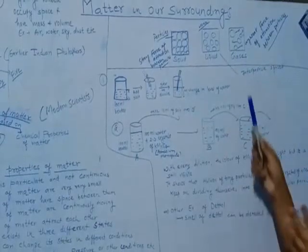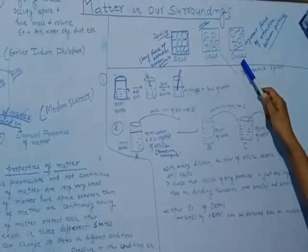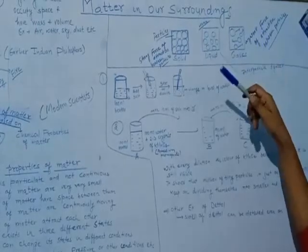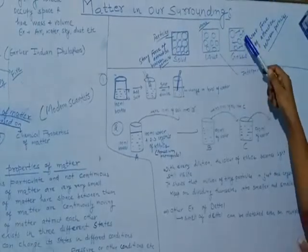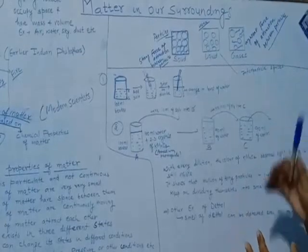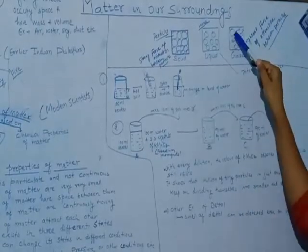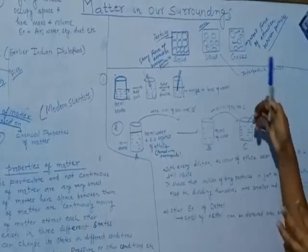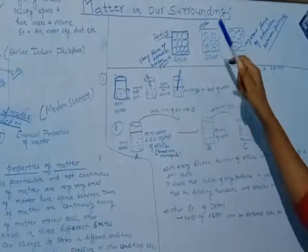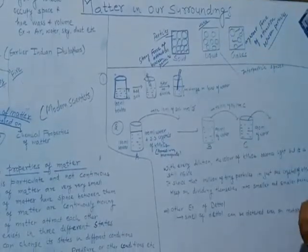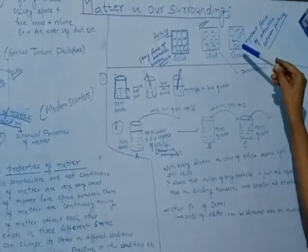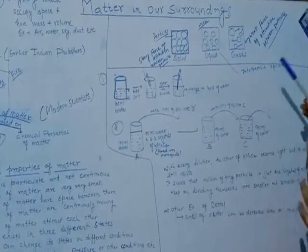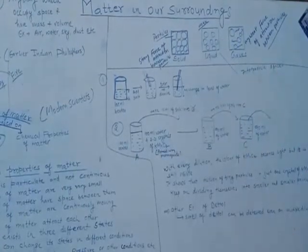In liquid, the force of attraction between the two particles is very low, and that is why they are loosely arranged. In gases, the particles can move in different directions. The arrangement is very loosely arranged and the space between particles is much greater than in liquid, because the force of attraction between gas particles is very, very weak compared to liquid.